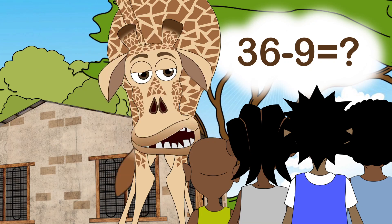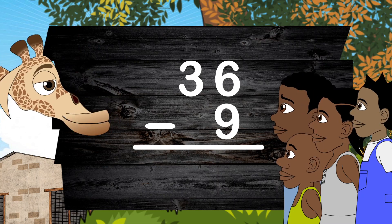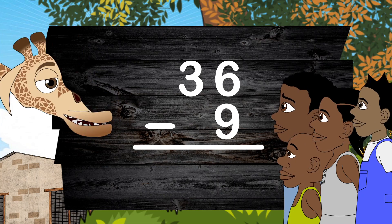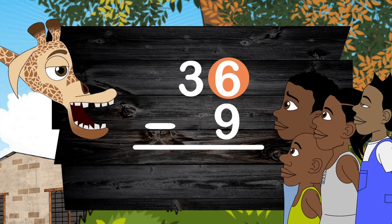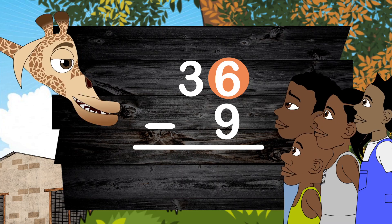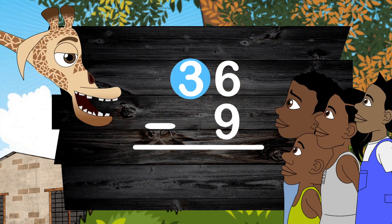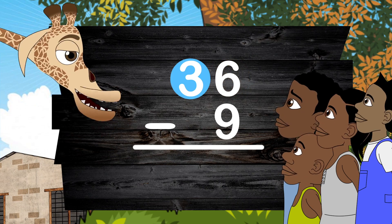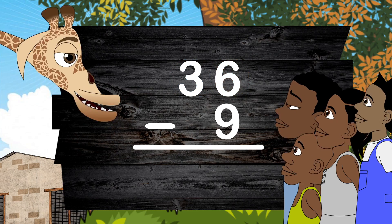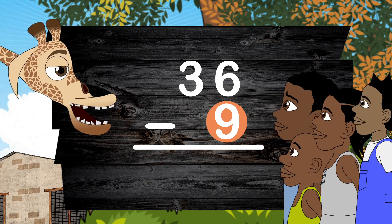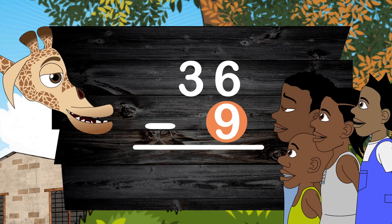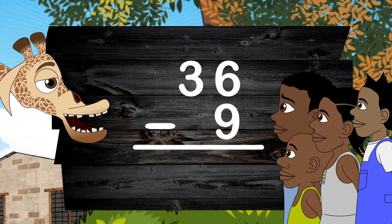Remember this. Let 36 subtract 9 — we want the answer. Let's place them in their correct columns. The 6 belongs to the place value of 1's. The 3 belongs to the place value of 10's. How much do we subtract? We subtract 9.